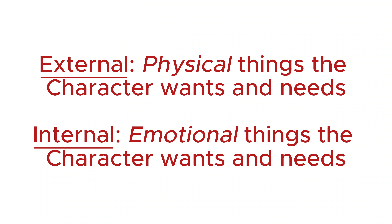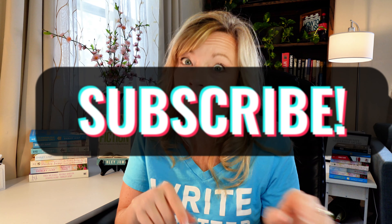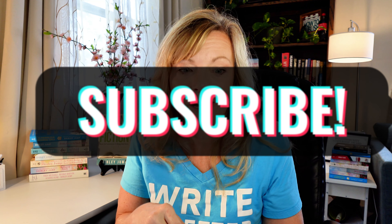Now you should have two lists: the external goal, motivation, and conflict — all the physical, tangible things in the plot — and the internal goal, motivation, and conflict — everything going on inside the character. These two things are going to continually interact throughout the plot, and I'll explain how in a future video. So if you haven't subscribed, this is a good time to do that. Remember, the emotional is probably the most important thing in your book, so take the time to figure this one out.